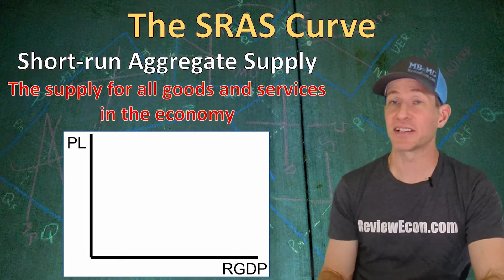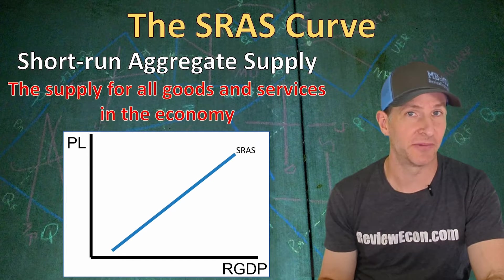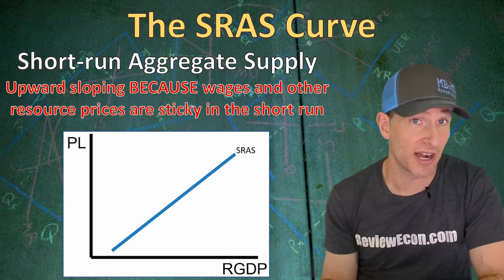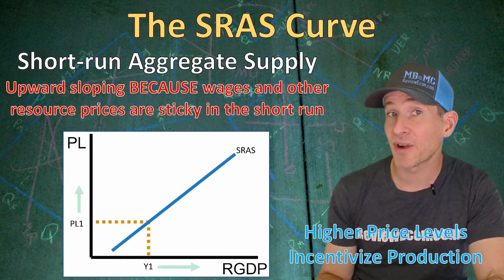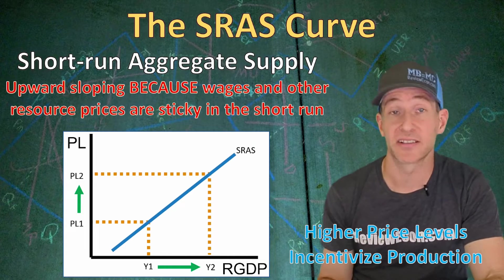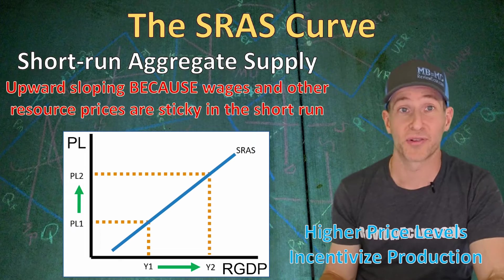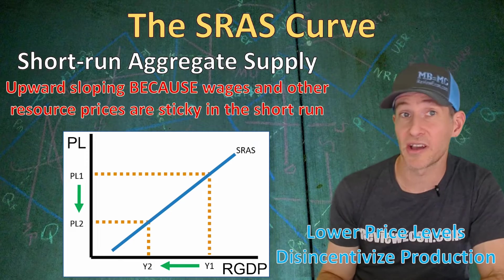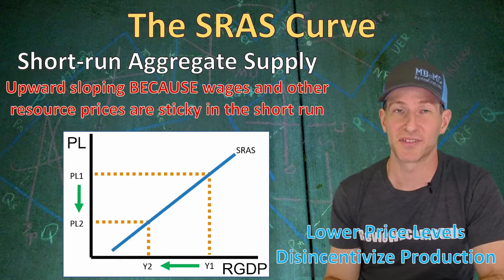When we graph out the short run aggregate supply curve, it's going to be upward sloping, showing a direct relationship between the price level and the quantity of real GDP we get. The reason why the short run aggregate supply curve is upward sloping is because wages and other resource prices are sticky in the short run. Since wages and other resource prices are sticky, higher price levels come with more profit for individual businesses, incentivizing more production. That's why we get higher levels of real GDP at higher price levels on that short run aggregate supply curve.